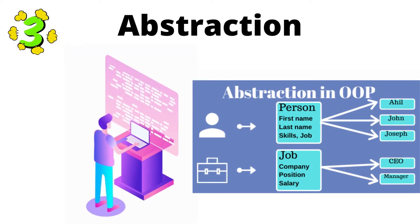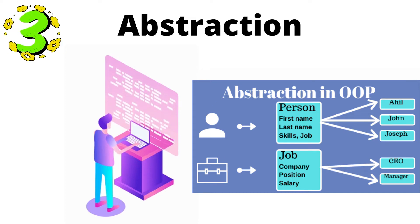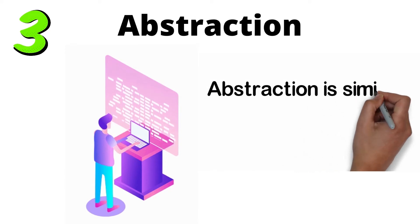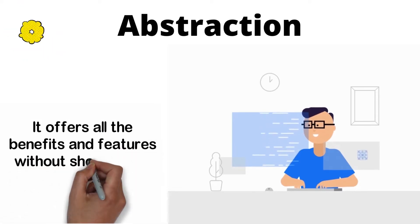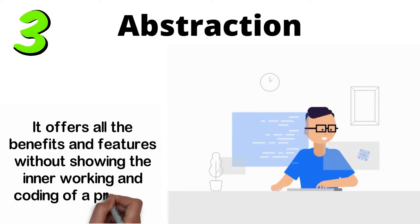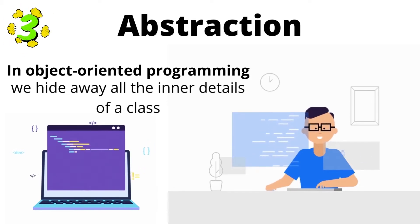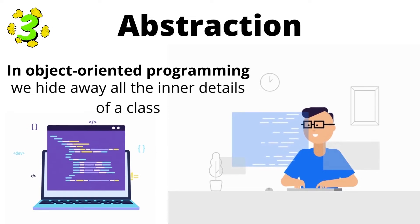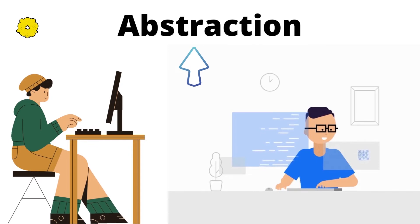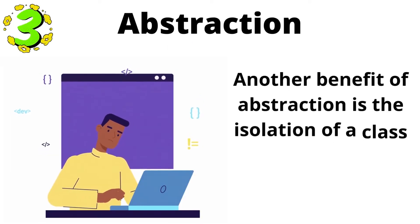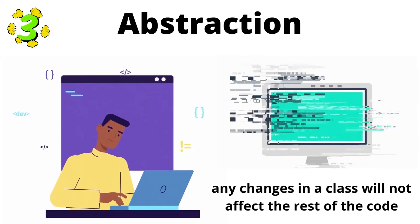3. Abstraction. When writing code, the priority is to offer an efficient interface. You can compromise on the implementation. Abstraction is similar to an SRS document's black box property. It offers all the benefits and features without showing the inner working and coding of a program. In object-oriented programming, we hide away all the inner details of a class. As a result, users can easily interact with the interface. You can also access class members individually via abstraction. Another benefit of abstraction is the isolation of a class, meaning that any changes in a class will not affect the rest of the code.